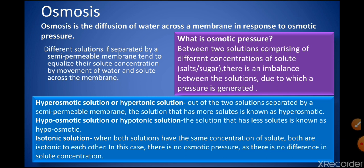To understand osmosis we first need to know what exactly is osmotic pressure. When two solutions are placed beside each other and a semi-permeable membrane is kept in between, and when these two solutions have different concentrations of solute, there is an imbalance between the solutions due to which a pressure is generated, which is known as osmotic pressure. Different solutions separated by a semi-permeable membrane tend to equalize their solute concentration.